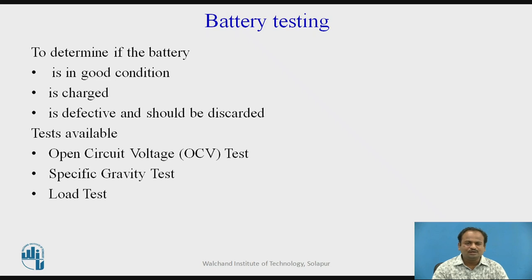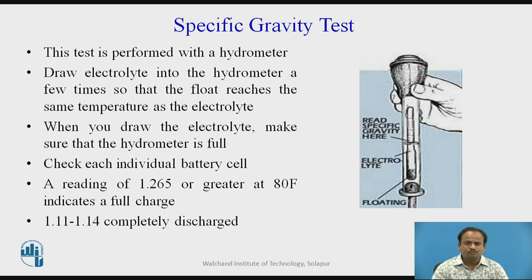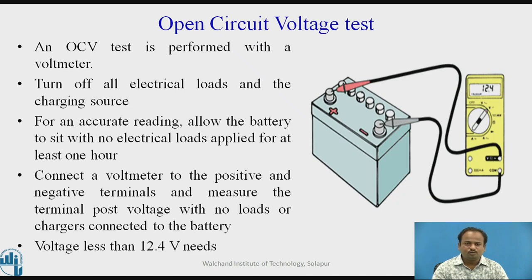Here you can see the circuit diagram — there is a battery and there is a voltmeter. In this OCV test, the voltmeter is used. Turn off all electrical loads and charging sources from your vehicle. For an accurate reading, allow the battery to sit with no electrical loads applied for at least one hour. Connect a voltmeter to the positive and negative terminals and measure the terminal post voltage with no loads or chargers connected. A voltage less than 12.4 volts means the battery needs to be replaced.